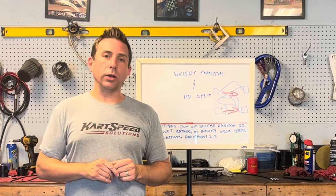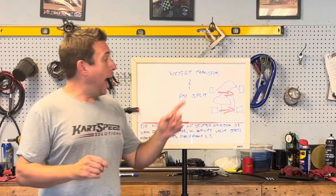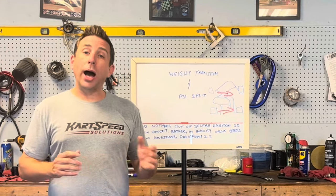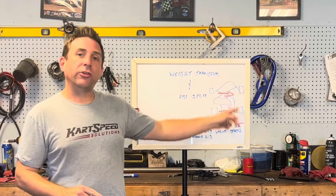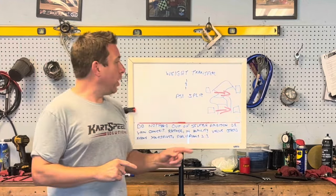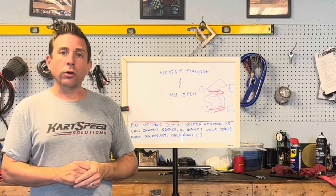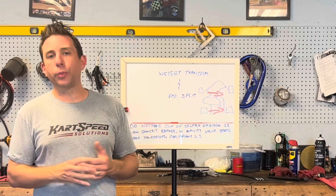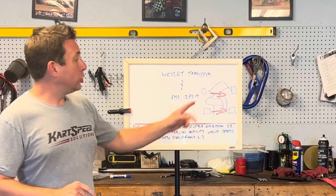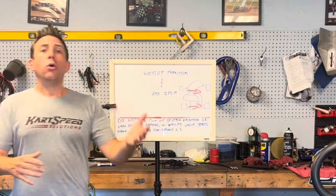That essentially frees up the go-kart. So if you go from a one-pound split to a two-pound split, you're freeing up the go-kart because you're making it harder for it to transfer weight to the right side tires — because it's a stiffer spring rate on the right side tires. On a go-kart we don't have shocks or suspension; our suspension is the sidewall of the tire. So the higher the air pressure and the higher the split, the less the go-kart is going to transfer weight to your right side tires.